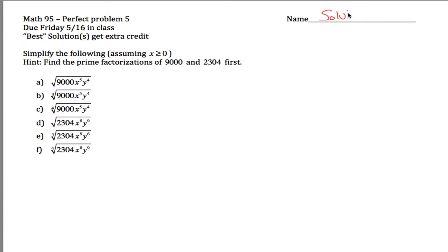Here are solutions for Math 95, practice problem five. We're asked to simplify a bunch of stuff — simplify each of these. It looks like a lot of work, but once we get the hang of it, you'll see that A, B, and C are pretty similar, and D, E, and F aren't that different. The first step, as the hint alludes to, is we want to find the prime factorizations.